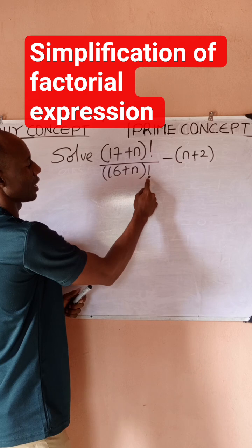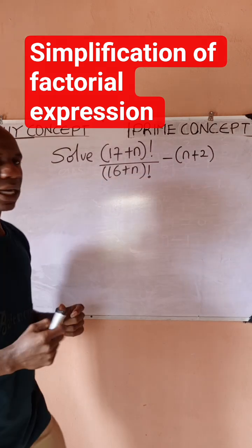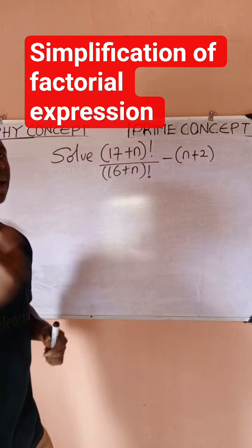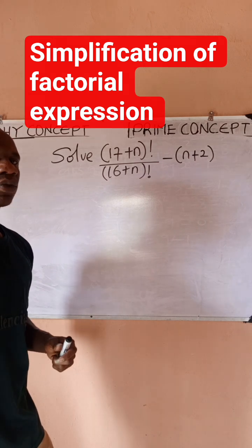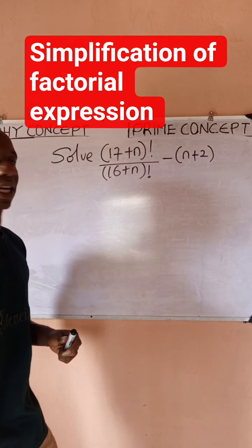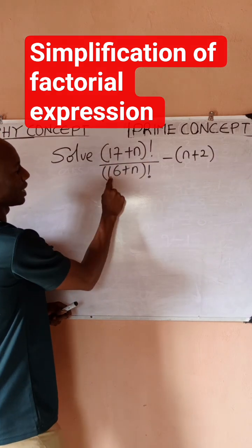This is factorial, this is factorial. When you have factorial problems, always reduce the bigger one. Don't reduce the small one, work on the bigger value. So (17+n) is bigger than (16+n), so I would affect this and leave this the way it is.